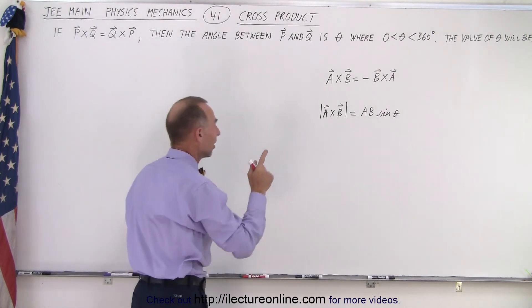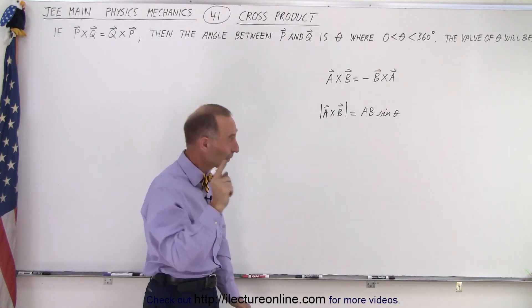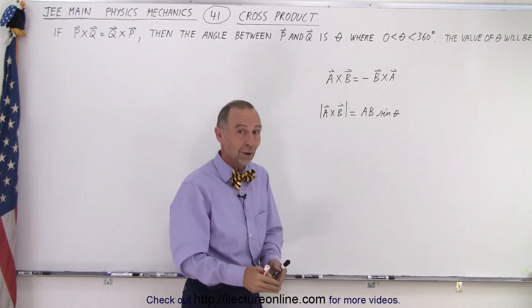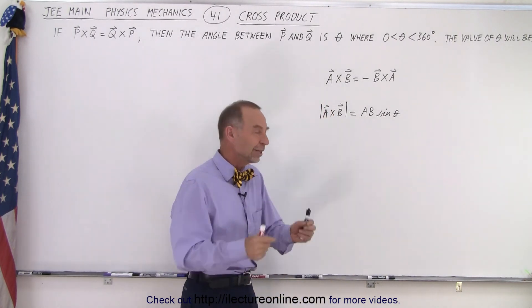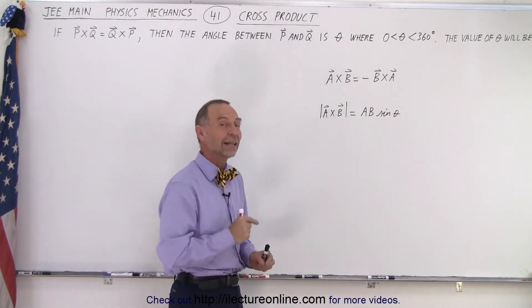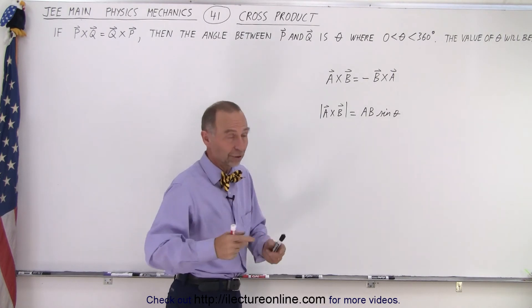So, that cannot be the case unless, one thing, unless the sine of theta equals 0. Because then we know that 0 equals 0. So, the only way that can happen is if we have an angle theta that makes the sine of that angle 0 because then we have 0 equals 0.